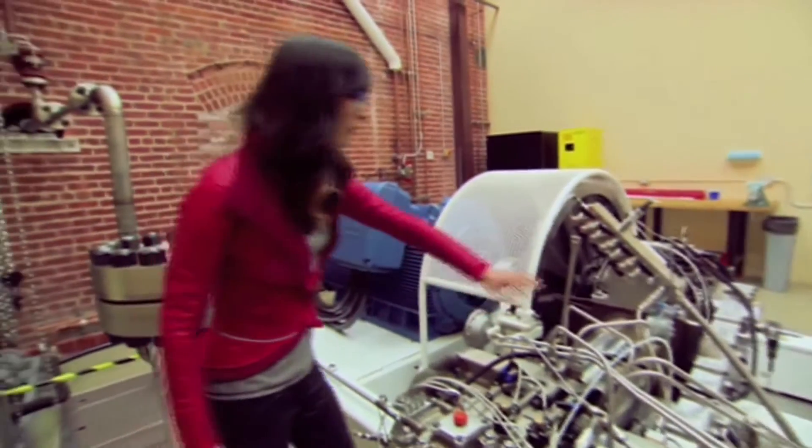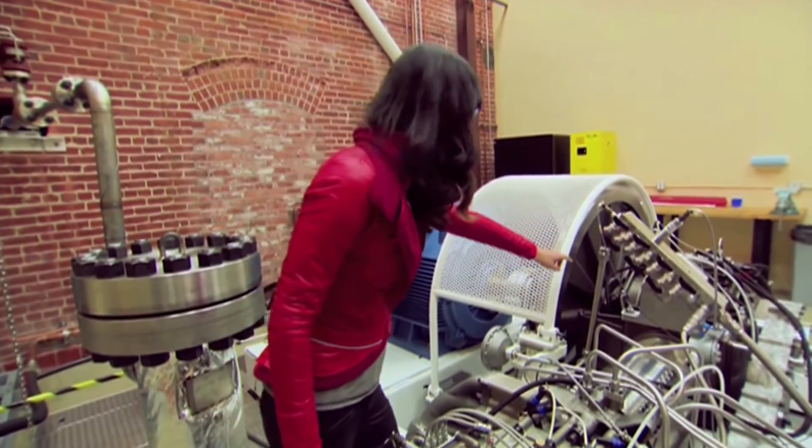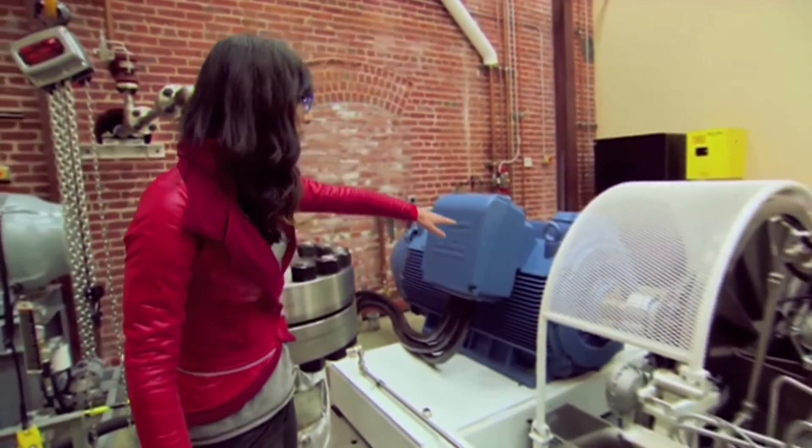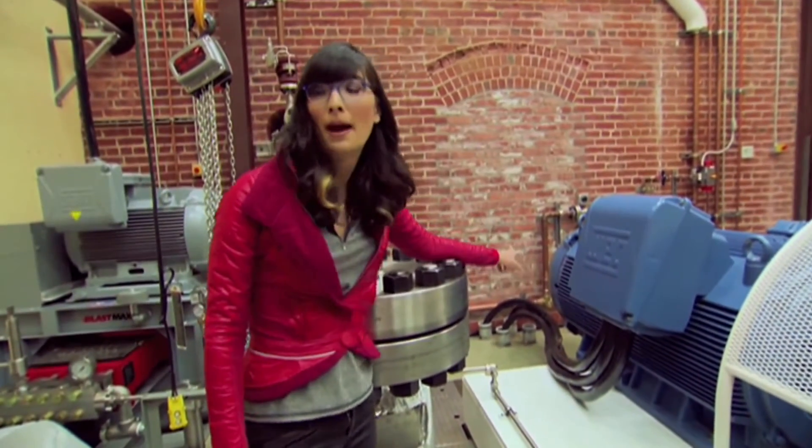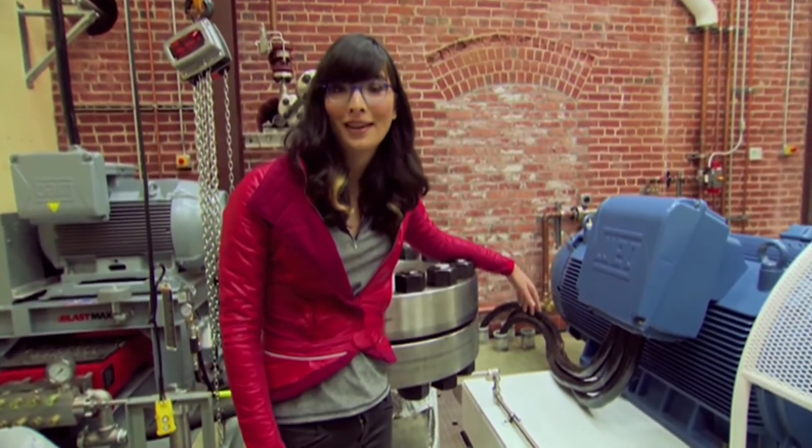Then power comes out of the cylinder, through the crankcase, and out to the motor generator, which then turns into AC power to power your home with anything else you need.